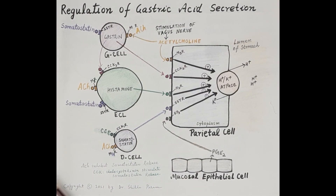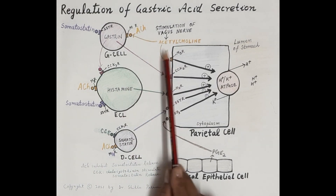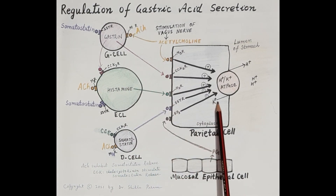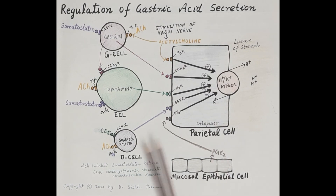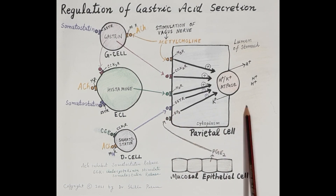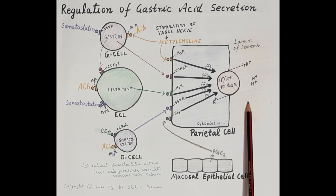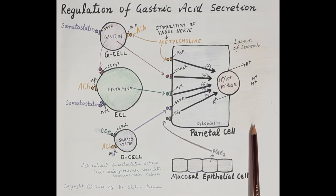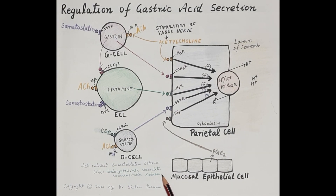In summary, gastrin, histamine, and acetylcholine increase the secretion of gastric acid by the parietal cells, whereas somatostatin and prostaglandins reduce the secretion of gastric acid — and this is how gastric acid secretion is regulated. If you find the video useful, kindly like, subscribe, and share. Thanks for watching.